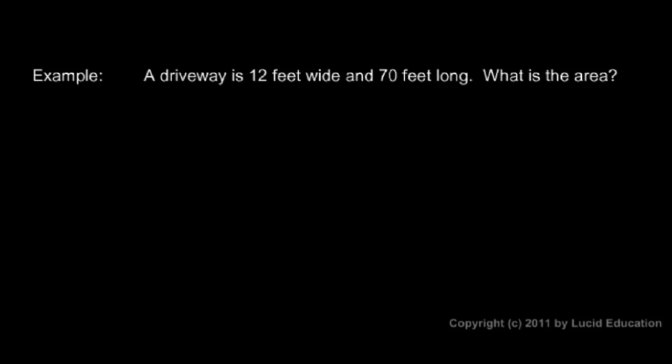And here's an example. A driveway is 12 feet wide and 70 feet long. What is the area? Well, we multiply 12 times 70. Put our 0 there. 7 times 2 is 14. 7 times 1 is 7. And we add the 1 up there, and we get an 8. So 840. Now note that this was 12 feet times 70 feet. And those feet have to be multiplied too, and we get square feet for the answer. So the area of the driveway is 840 square feet.